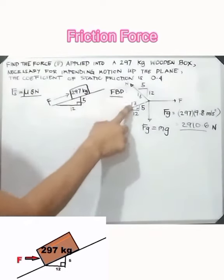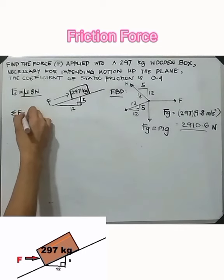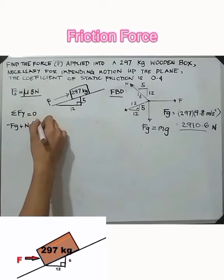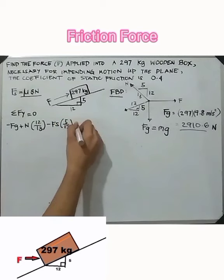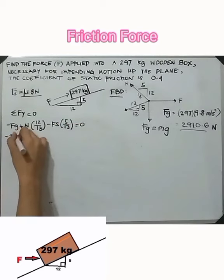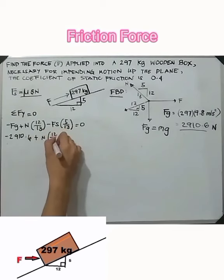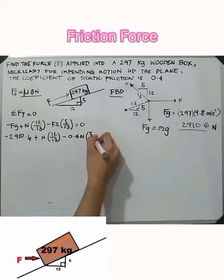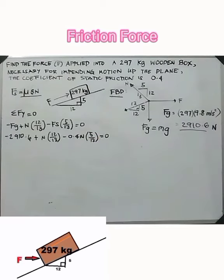To identify all forces and directions, we draw a free body diagram. From the summation of Fy = 0, we have the negative gravitational force, which is mass times gravity, and adding the normal force component and the static friction component using the Pythagorean theorem.